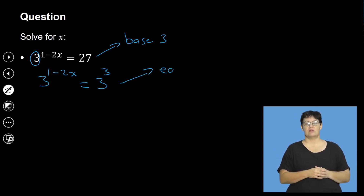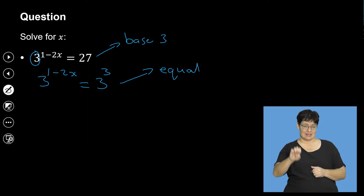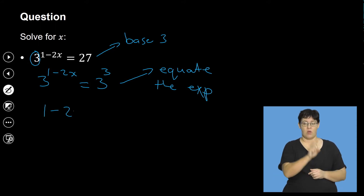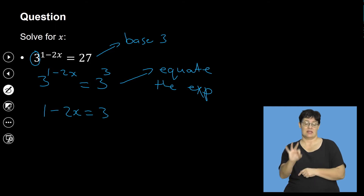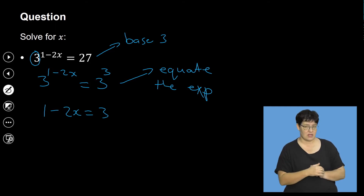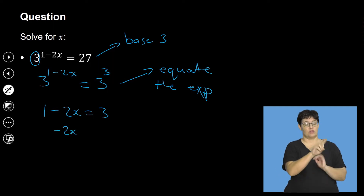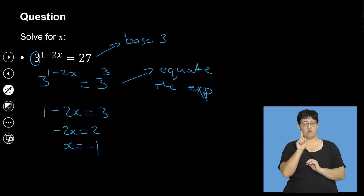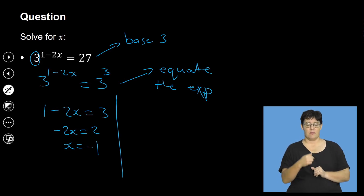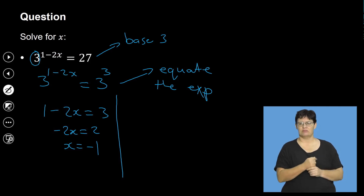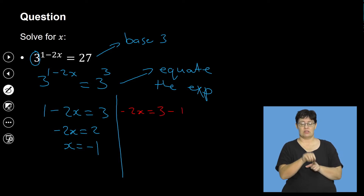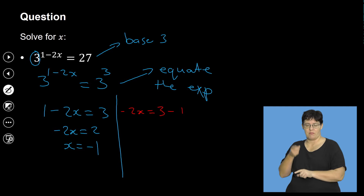Because the bases are the same and you have one power on each side, equate the exponents: 1 minus 2x equals 3. Then algebra: minus 2x equals 3 minus 1, which is 2, so x equals negative 1.